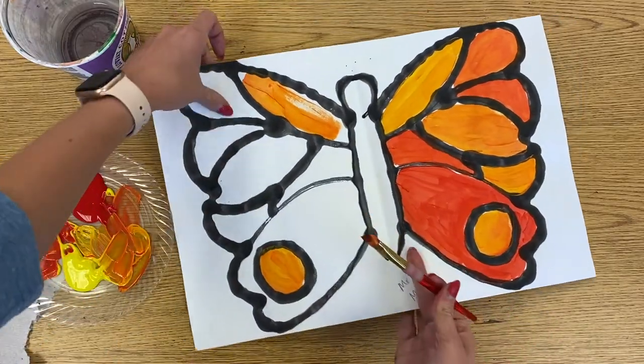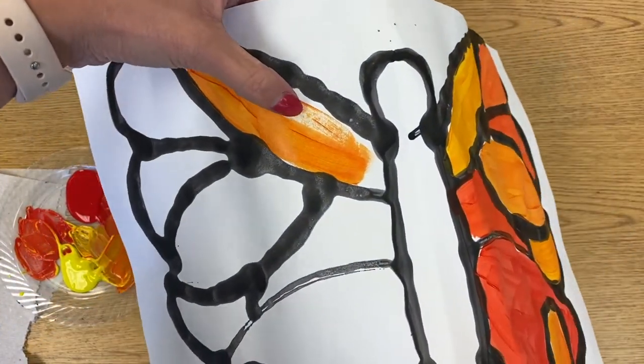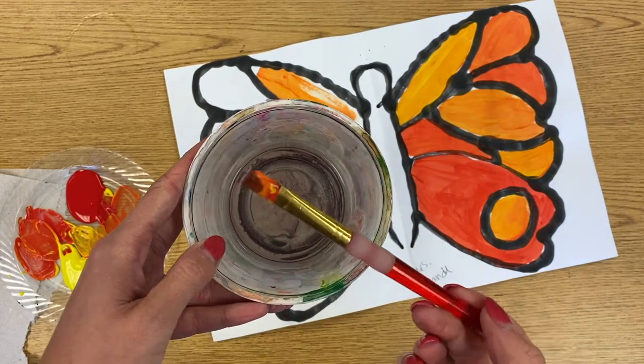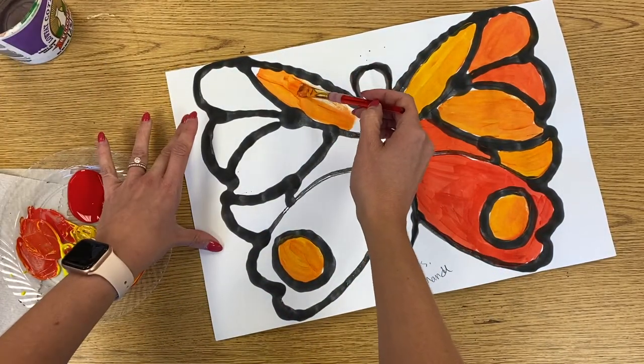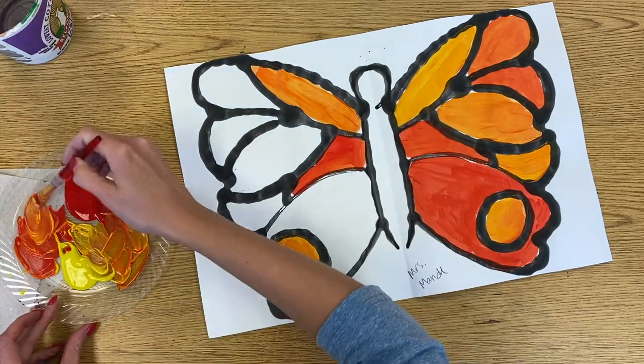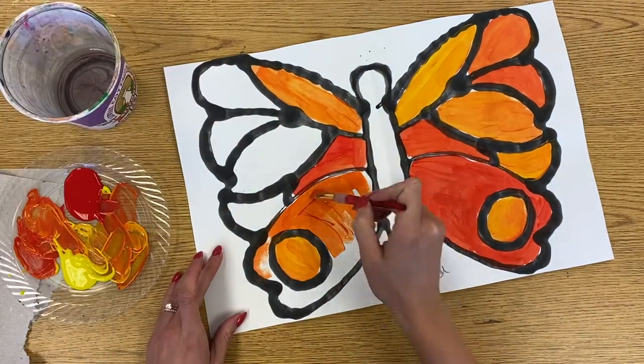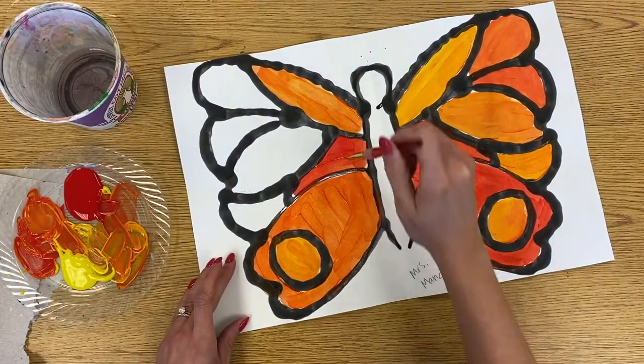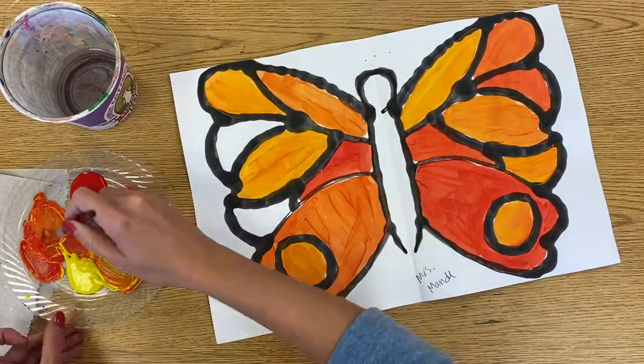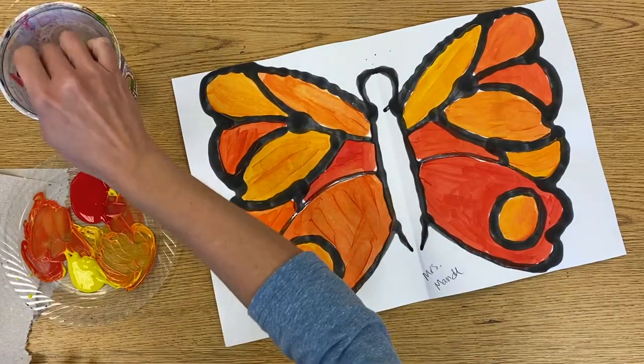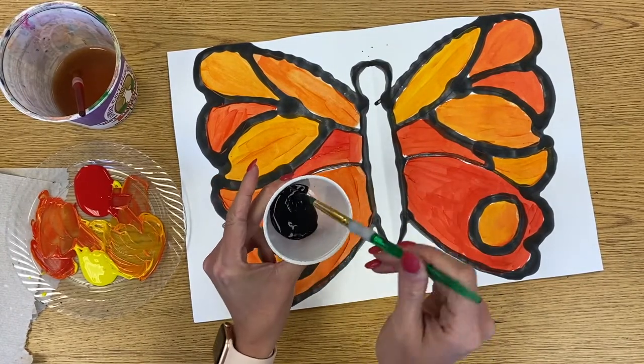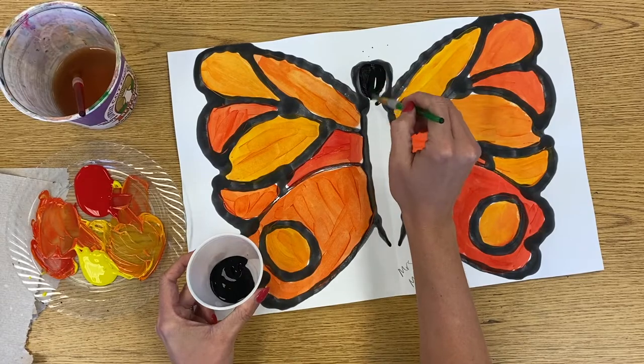Sometimes your paintbrush might get a little bit dry. So you can see right here, my paintbrush is looking kind of scratchy and dry. So an easy way to fix that is dip your paintbrush in some water. I like to say he's getting a drink. And then now it will work really, really nice and smooth. So when you're finished with your orange, you will need to use some black paint. So your black paint is going to be for the butterfly's head and the butterfly's body.